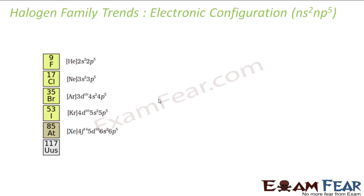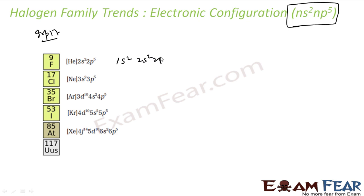Let's start with the electronic configuration. The reason why all these elements are in group 17 is because they have a common electronic configuration pattern, that is ns² np⁵. For fluorine the configuration is 1s² 2s² 2p⁵, giving atomic number 9. For chlorine it is 3s² 3p⁵, bromine 4s² 4p⁵, iodine 5s² 5p⁵, and astatine 6s² 6p⁵.